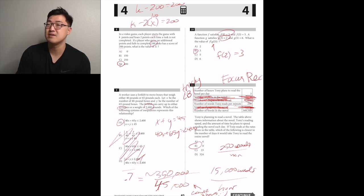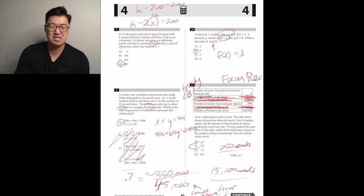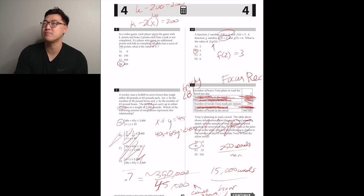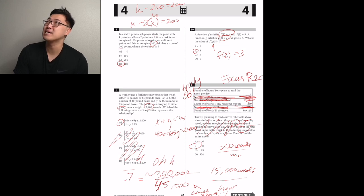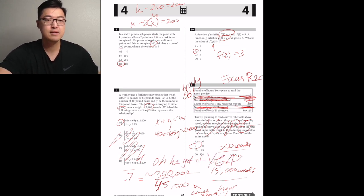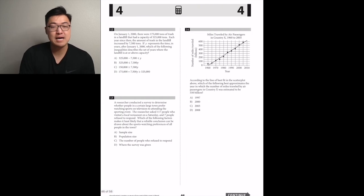We have to do 350,000 divided by 45,000, which is about 10 with an extra 100,000 left over — so going down by about two, that'd be like 8. B.